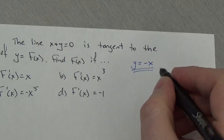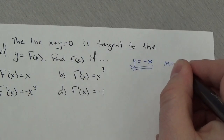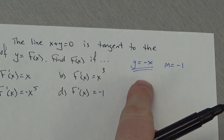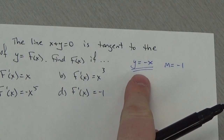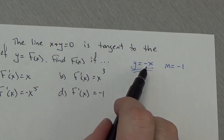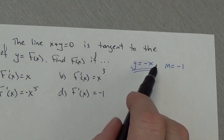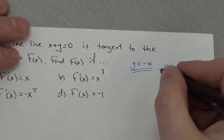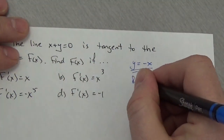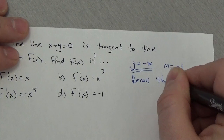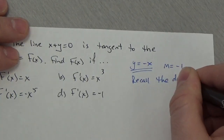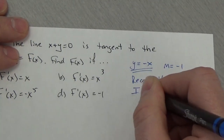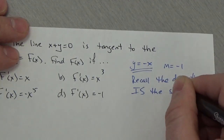Notice that the slope of that line is negative one — you know that from grade ten. This is already written in slope-intercept form, so the coefficient of x is the slope. That's significant because recall: the derivative is the slope of the tangent.